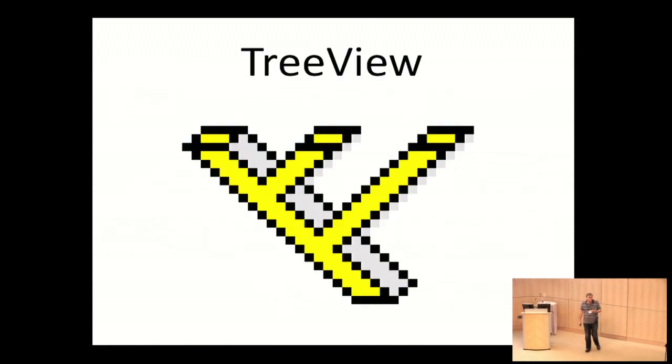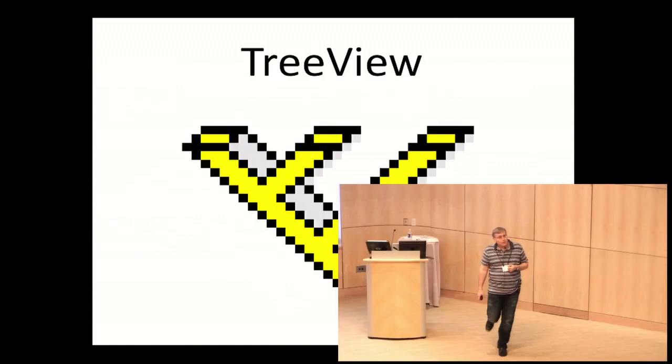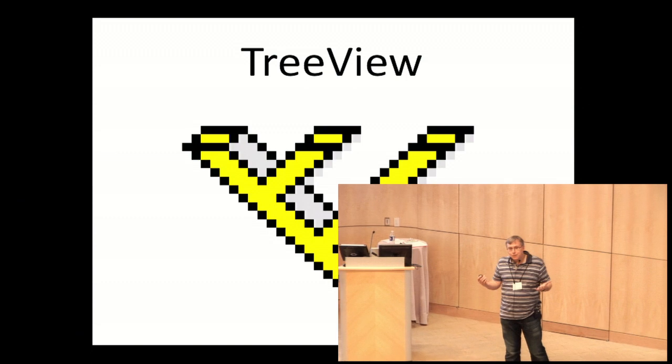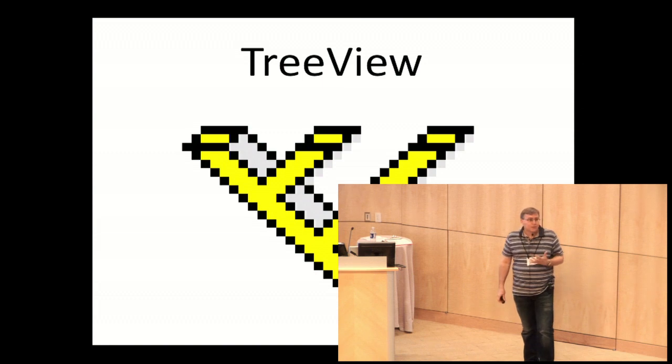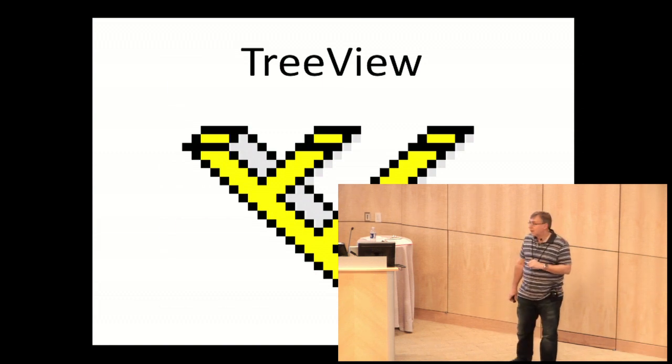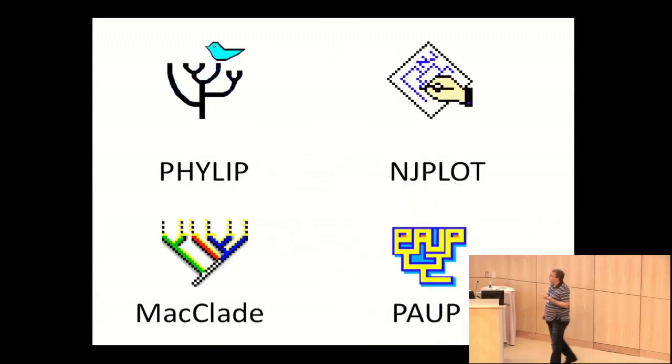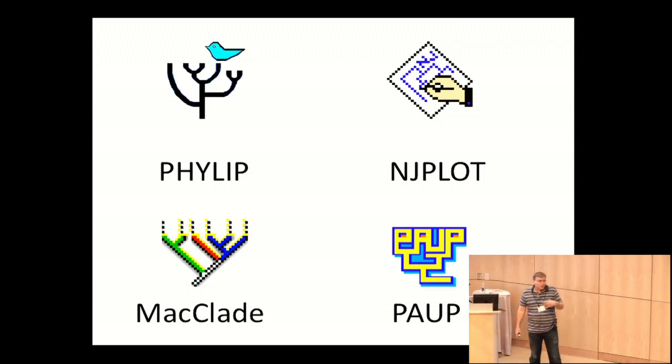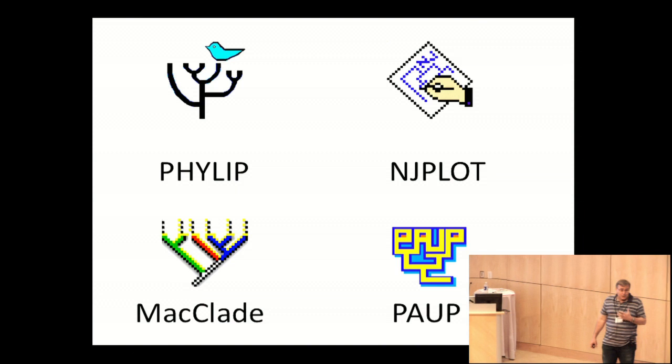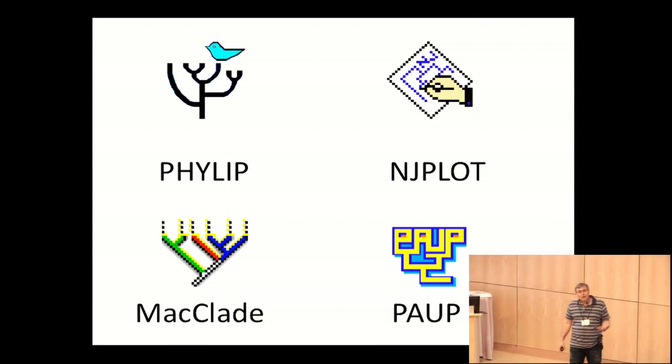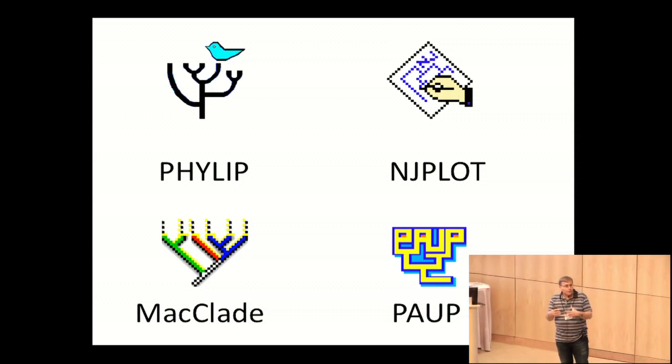About 15 years ago, I wrote a program called TreeView. It was a simple program to display evolutionary trees on Macs and PCs. I wanted a simple tool just to grab a tree and show it. There were a few programs around that time like FileUp and NJPlot that I thought were a little too clunky. Programs like FileUp and MacLay weren't clunky but did too much. You needed data. I just wanted to grab a tree and show it.